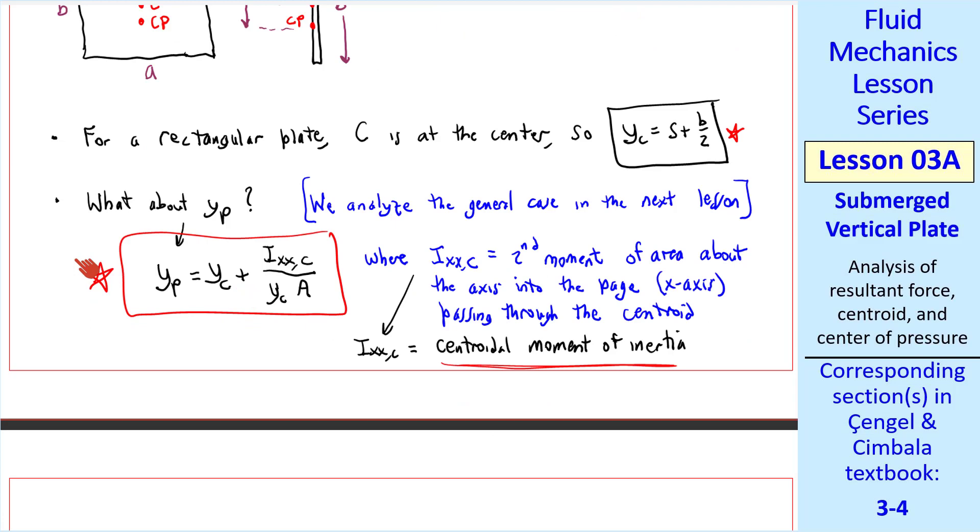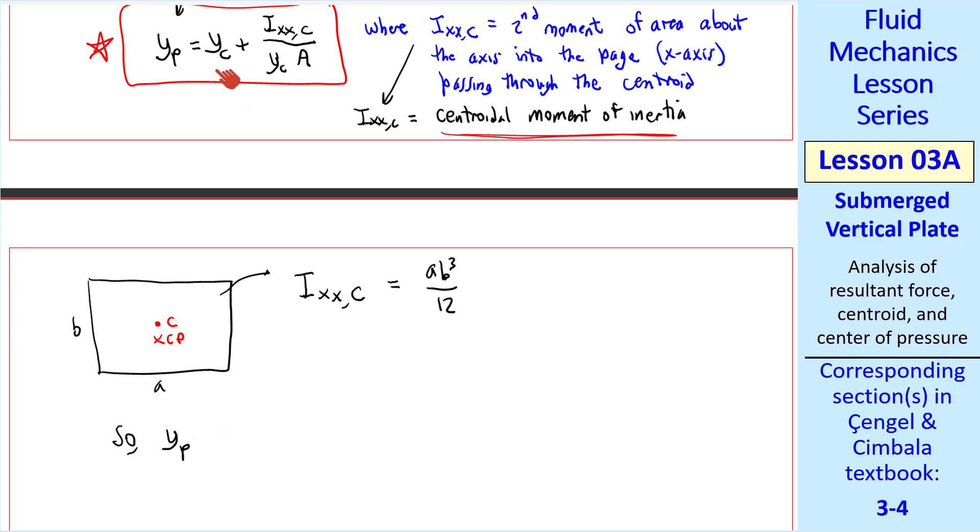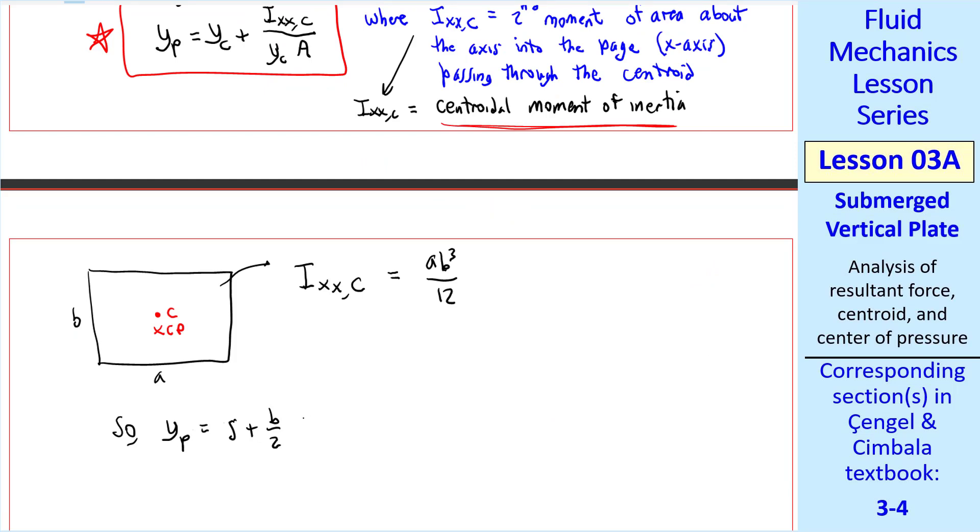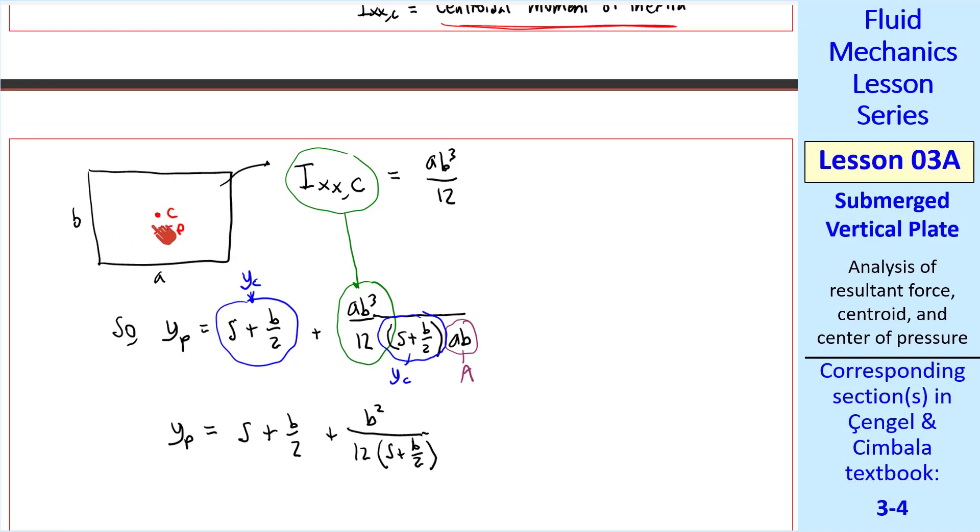Now let's apply this equation to our rectangular plate. For a rectangle, it turns out that IXXC, the centroidal moment of inertia, is AB cubed over 12. So YP from this equation is YC, which we know is S plus B over 2 in our case. So YP is S plus B over 2 plus IXXC divided by YC times A. YC is S plus B over 2 again, and the area is simply A times B. A little bit of simplification gives us YP equal S plus B over 2 plus B squared over 12 times quantity S plus B over 2. Notice that little a cancels out. That's because it doesn't matter how wide the plate is. The pressure distribution is the same at any portion of this plate width-wise. So the locations of C and CP do not depend on A. So this is the CP depth for a vertical submerged rectangular plate.